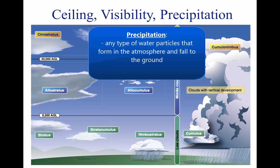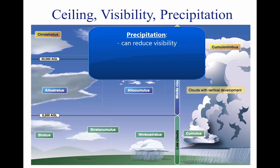Precipitation refers to any type of water particles that form in the atmosphere and fall to the ground. It has a profound impact on flight safety. Depending on the form of precipitation, it can reduce visibility, create icing situations, and affect landing and takeoff performance of an aircraft.